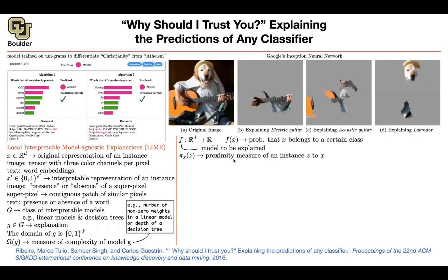We need something else. Given a data point, we want to look at only the other data points that are close to the current data point. For instance, given this image, we want to give more weight to images that are close to it and less weight to images that are far, because we want a local dataset to fit G — the simple model — to it. And we're going to have a loss function.